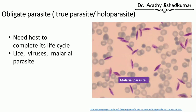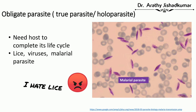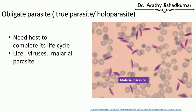Obligate parasite is also known as a true parasite. This parasite cannot survive or finish its life cycle without a host. Examples include lice, virus, and malarial parasite. If you remove lice from the scalp and keep it outside for a long time, the lice will eventually die — it cannot survive without the host.